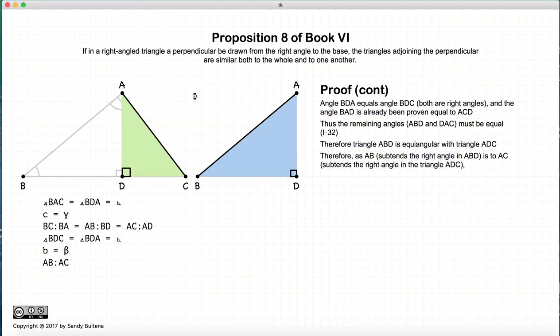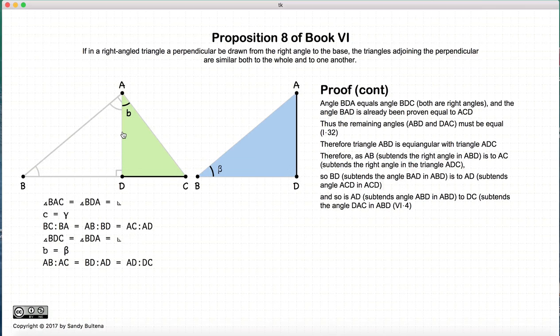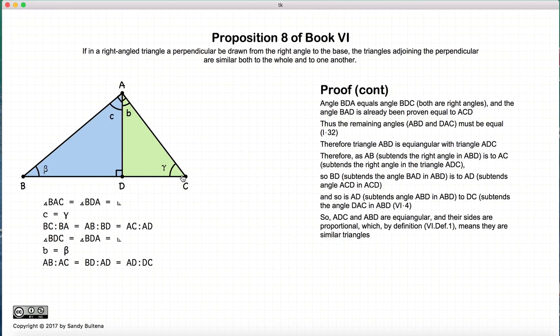And we're just doing the same thing again, where AB to AC is equal to BD to AB, which is also equal to AD to DC. So we've just demonstrated that ABD and ADC are equal angular, and the ratios all hold. So again this is the definition of similar. So ABD and ADC are similar.